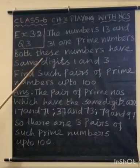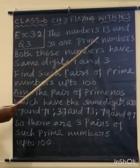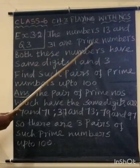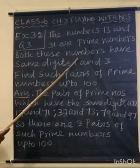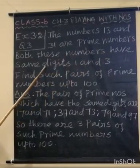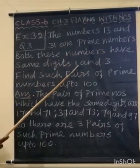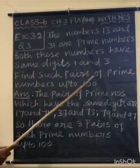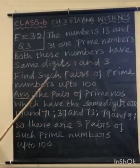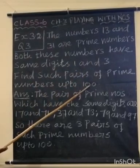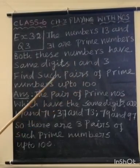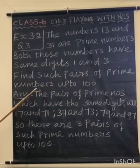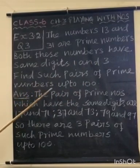Question number 3: The numbers 13 and 31 are prime numbers. Both these numbers have the same digits 1 and 3. Find such pairs of prime numbers up to 100. First, you write the prime numbers up to 100.